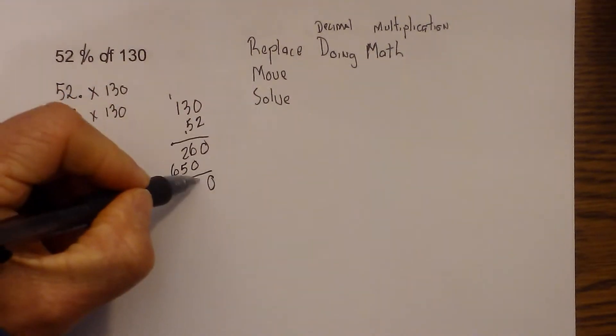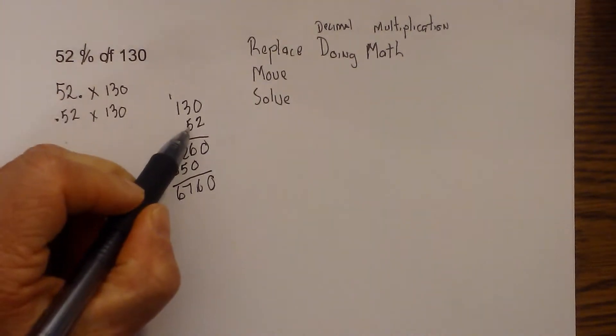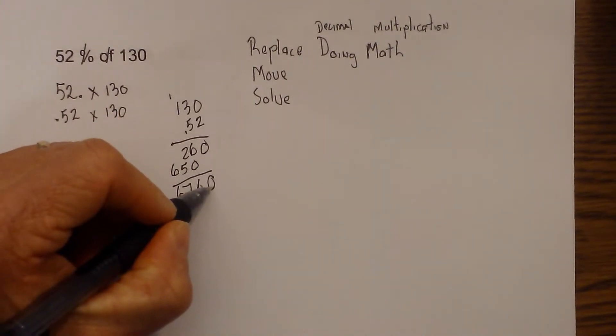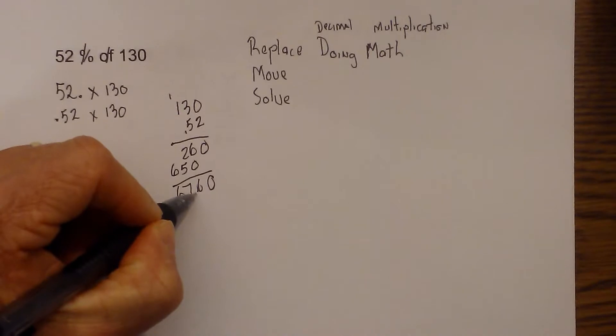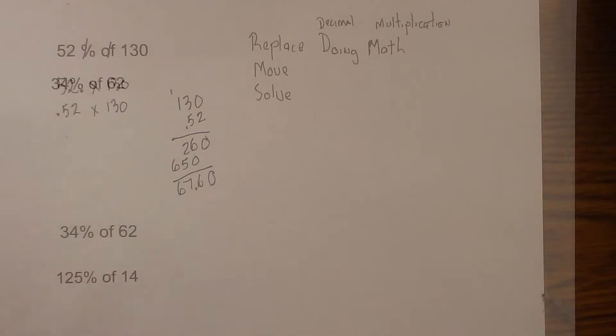Bring this down, 0, 6, 7, 6. And now I have two places to the right. So I need to move it two places to the left so that I have two places to the right. So it becomes 67.6. Now let's go ahead and work the next one.